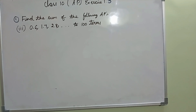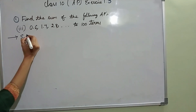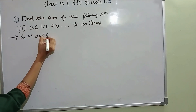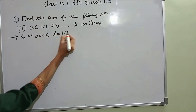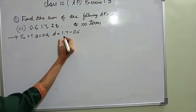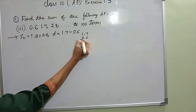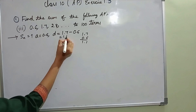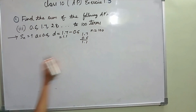Similar problem. Here also we need to find SN, that is the sum of nth terms. A value is 0.6. D is second term minus first term: 1.7 minus 0.6 equals 1.1. That is D equal to 1.1. Up to 100 terms, that is N equal to 100.